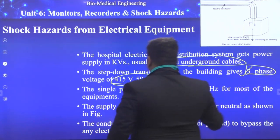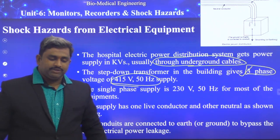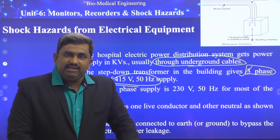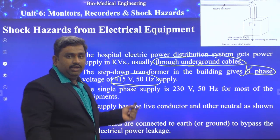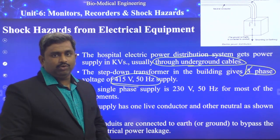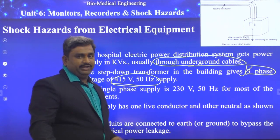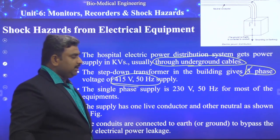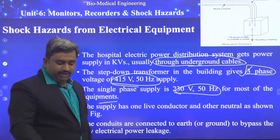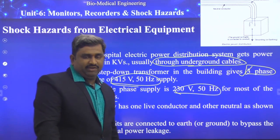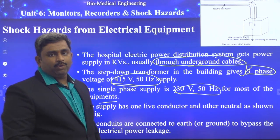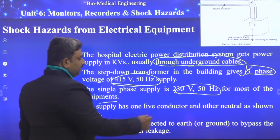The step-down point of the building gives a three-phase voltage of 415V at 50Hz supply. Generally for hospitals we are providing three-phase supply for commercial purpose, while the government provides single-phase supply for home purpose. The three-phase supply range is 415V at 50Hz. For single-phase supply, 230V at 50Hz is provided for most equipment. 415V is provided for heavy machinery and 230V for normal supply — these two types of supplies are provided in hospitals.